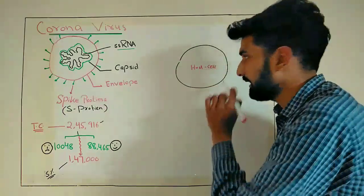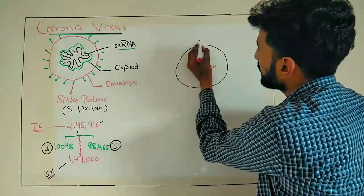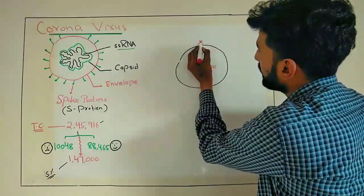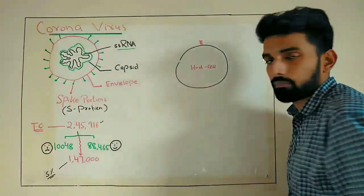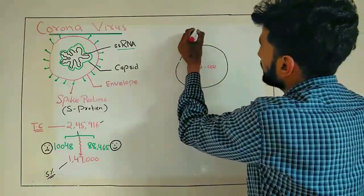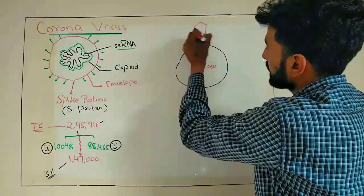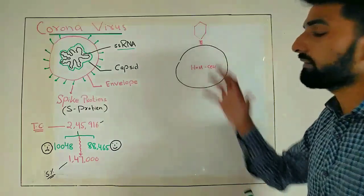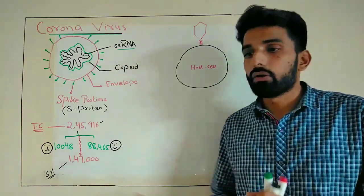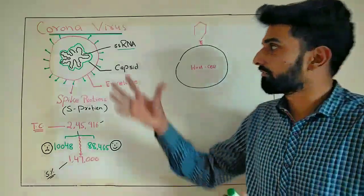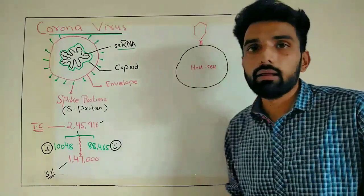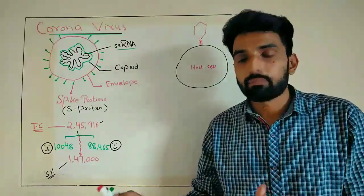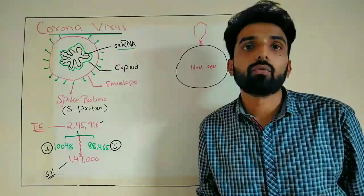So every host cell has some receptors for the attachment of virus. And obviously, these receptors are basically not for the purpose of getting virus into our cell. These have some other useful purposes.